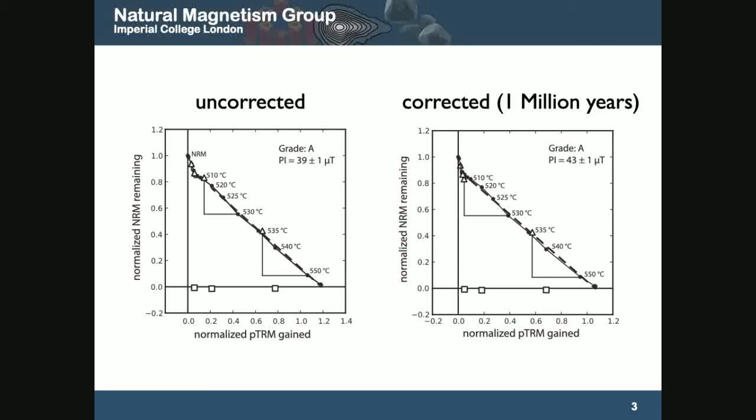Then we refit the data and we get an estimate. As you can see here, we've got a slight increase from 39 microteslas up to 43 microteslas. This is actually for a gabbro, so we're justified in using a 1 million year cooling time. This is just to assure the effect of that.